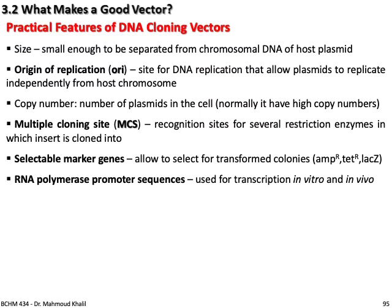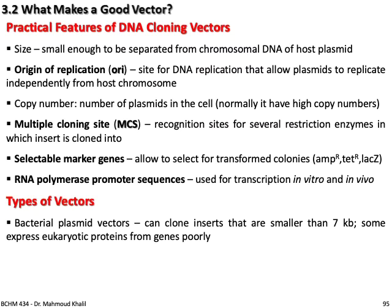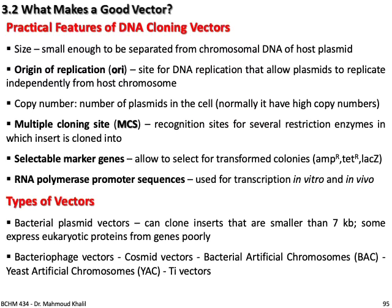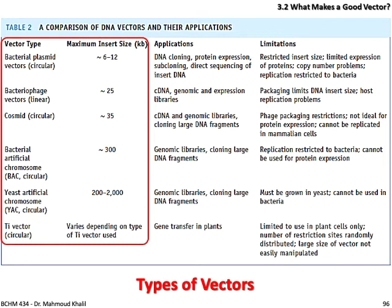Types of vectors: bacterial plasmid vectors can clone inserts smaller than 7 kb. Some express eukaryotic proteins from genes poorly. Other vector types include bacteriophage vectors, cosmid vectors, bacterial artificial chromosome (BAC), yeast artificial chromosome (YAC), and Ti vectors. You need to study the sizes and types of these vectors from the comparison table, which shows bacteriophage vectors, cosmid vectors, bacterial plasmid vectors, BACs, YACs, and Ti vectors along with their sizes.